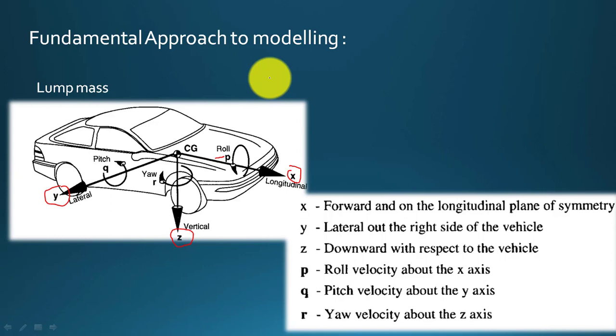SAE has fixed this coordinate system to study vehicle dynamics. For example, if the vehicle is moving in the positive X direction, it means the vehicle is moving forward. If the vehicle's movement is indicated by negative X, it means the vehicle is moving in reverse. This is the axis methodology prescribed by the SAE.